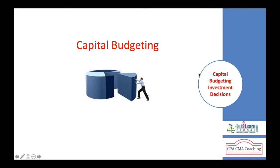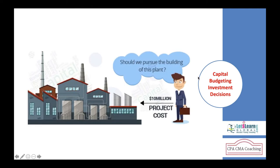What is capital budgeting? You need money to accept any project. For example, our manufacturing process is carried out in a rented factory building and we are paying rent of $100,000 a month — that's $1.2 million dollars a year.